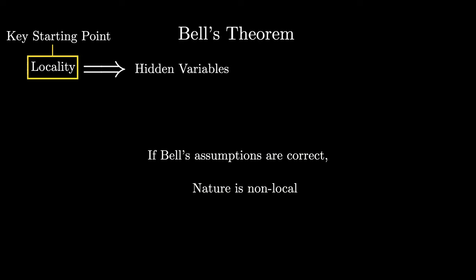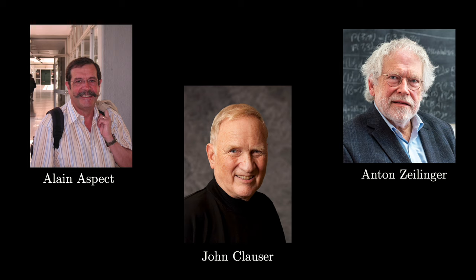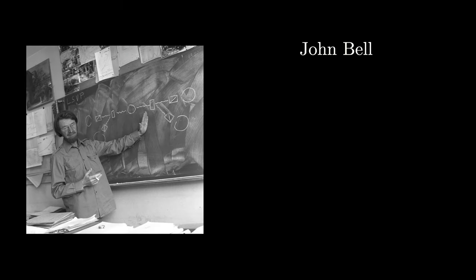And after the experiment done by Clauser, there have been subsequently many more experiments done that all verified this result. Two of the most significant were those done by Alain Aspe and those done by Anton Zeilinger, where they closed important loopholes that were involved in earlier experiments. And in 2022, Clauser, Aspe and Zeilinger were all jointly awarded the Nobel Prize for Physics. A prize that certainly would have been shared with John Bell for his monumental theoretical achievement had he still been alive.